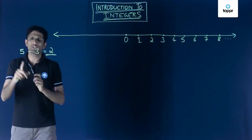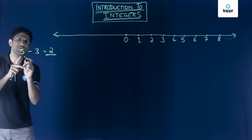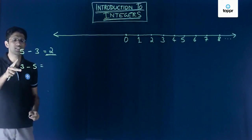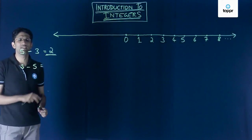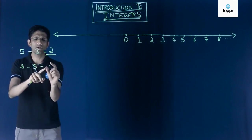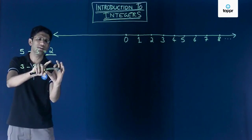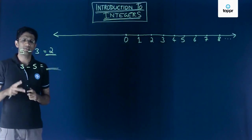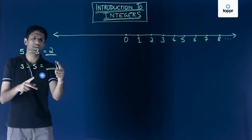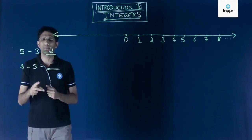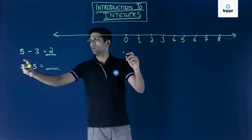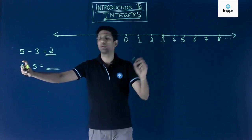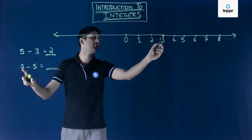But suppose we have an expression such as 3 minus 5. In this case, because 3 is less than 5, the operation becomes difficult — we do not know what number it will give us. In other words, 3 minus 5 cannot be a natural number, and it can also not be a whole number. If we start at 3 on the number line because we are doing 3 minus 5, we start at the value 3.